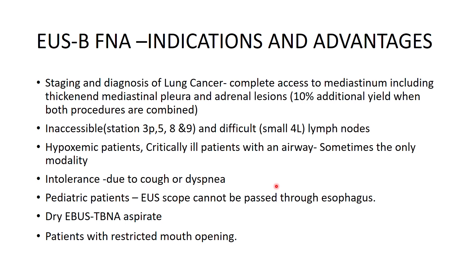EUS-B FNA is very useful in hypoxemic and critically ill patients, and in patients with an airway tube where you may not access all lymph nodes via the EBUS procedure — sometimes it may be the only modality. It is helpful in patients intolerant due to cough or dyspnea, in pediatric patients where the tracheal diameter is less than 9mm (children under 10 years), and in patients with a dry EBUS-TBNA aspirate or restricted mouth opening requiring the nasal route.